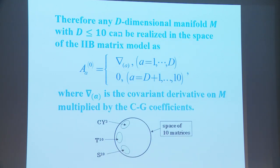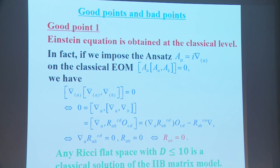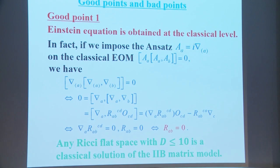Therefore, any D-dimensional manifold M with D ≤ 10 can be realized in the space of the 2B matrix model, where the symbol represents the covariant derivative on M multiplied by the Clebsch-Gordan coefficient. There are some good points and bad points.